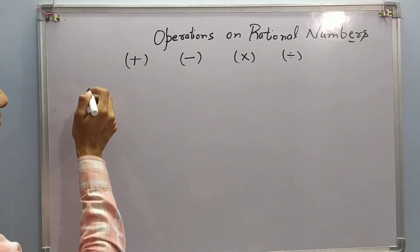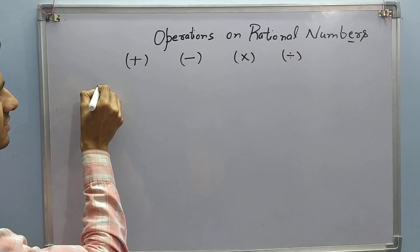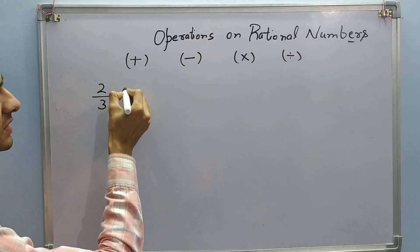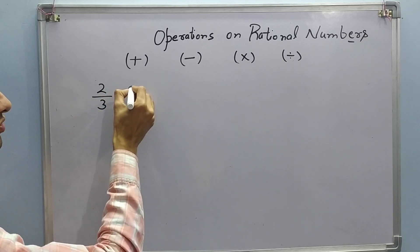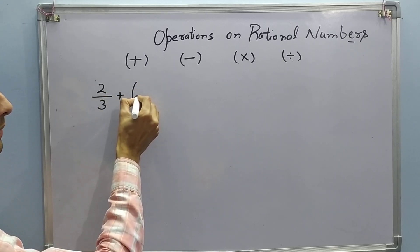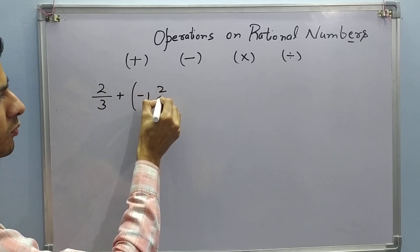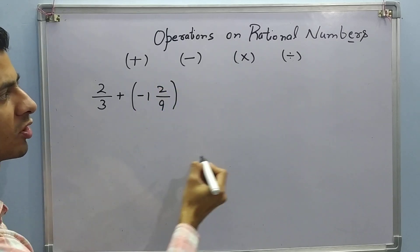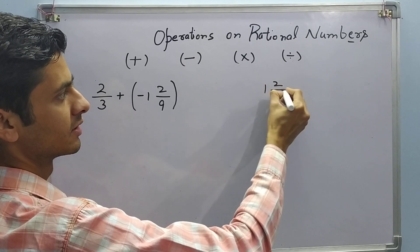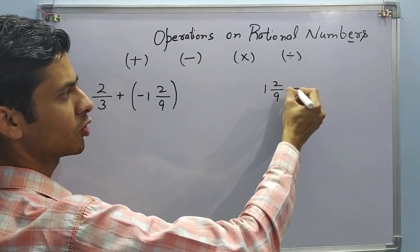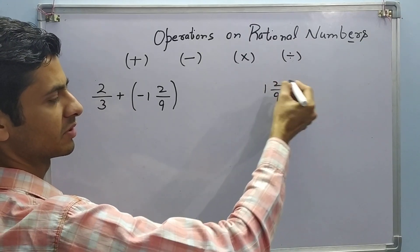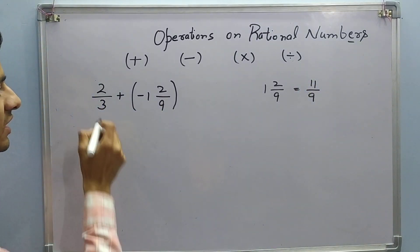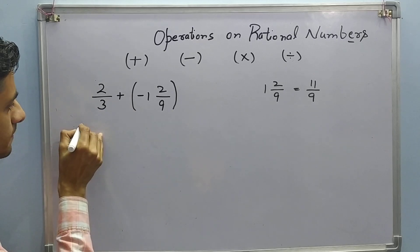Now let us take our rational numbers a little more complex and perform the same operations on it. Suppose we are having 2 upon 3 plus minus 1 whole 2 upon 9. 1 whole 2 upon 9 can be written in the form of p upon q. 9 into 1, 9 plus 2, 11 upon 9. Therefore it is also a rational number. Now how to add it?